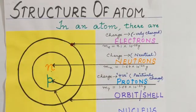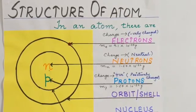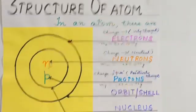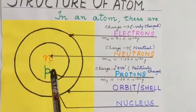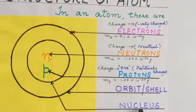As we all know, an atom is the basic building block of matter. So what consists of an atom? Now in any atom, as you all can see in this diagram, it has electrons, neutrons, protons, orbit and nucleus.